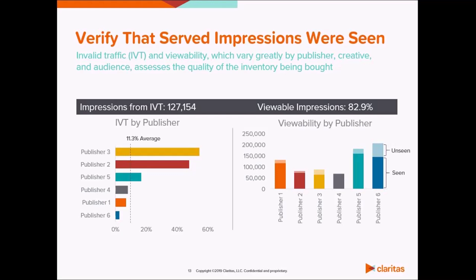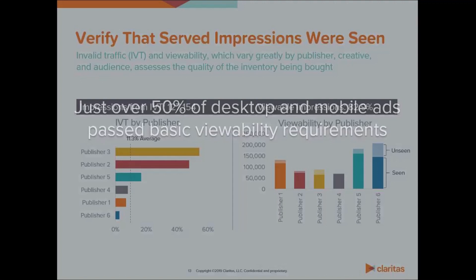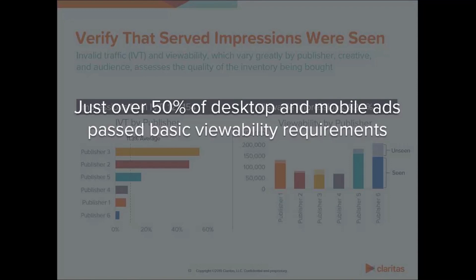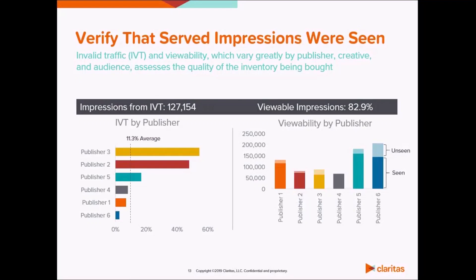Ad fraud estimates range from $6.5 billion by the ANA to up to $19 billion by Juniper Research. eMarketer reports that just over 50% of desktop and mobile ads actually pass viewability standards. A simple online search will provide many more statistics like these, so it's important to monitor ad fraud and viewability. While advertisers can debate which audiences or creative will be most effective, there's no debate that high levels of fraud and low levels of viewability are bad.